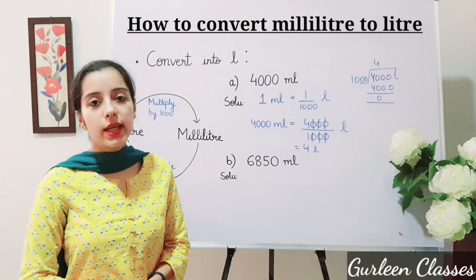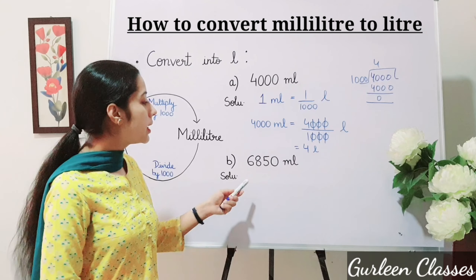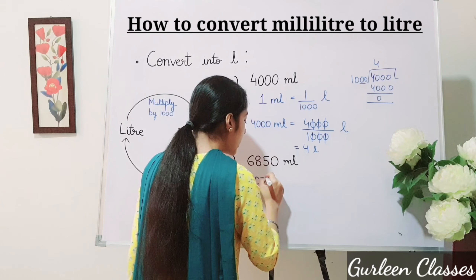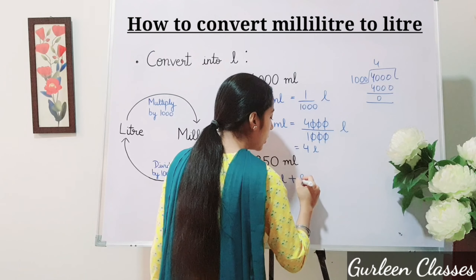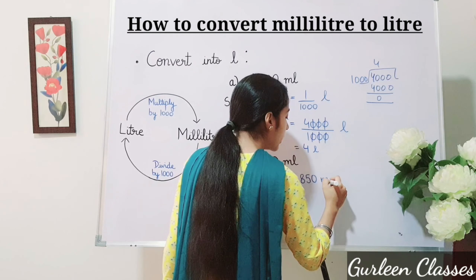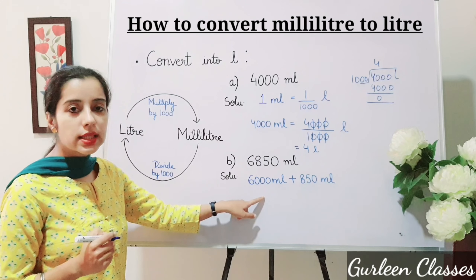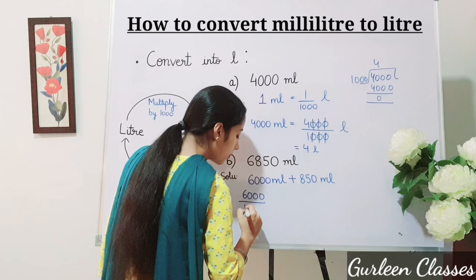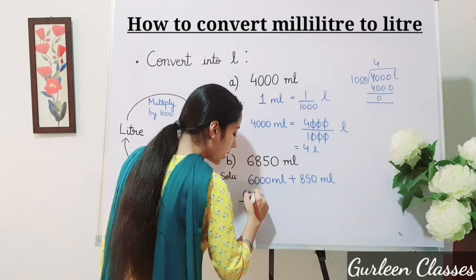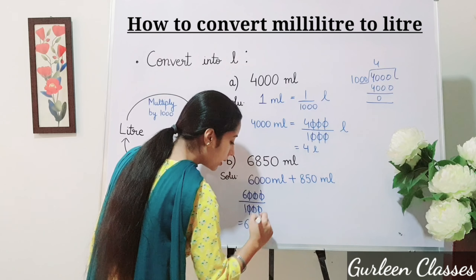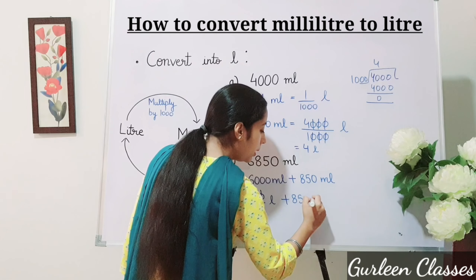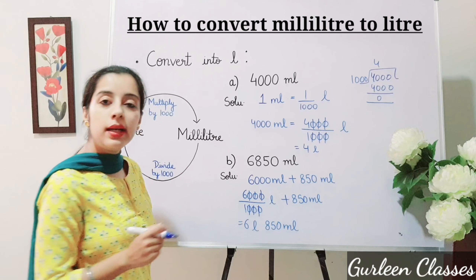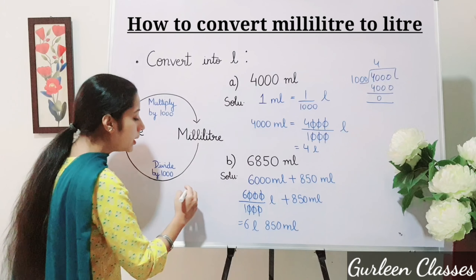Part B: 6850 milliliter. We will break the number in terms of thousands: six thousand milliliter, and in terms of hundreds: eight hundred fifty milliliter. Convert six thousand milliliter to liter by dividing by one thousand — cut three zeros — giving six liter plus eight hundred fifty milliliter. Let us verify by dividing 6850 by one thousand: one thousand goes into 6850 six times with a remainder of 850, so the answer is six liter and eight hundred fifty milliliter.